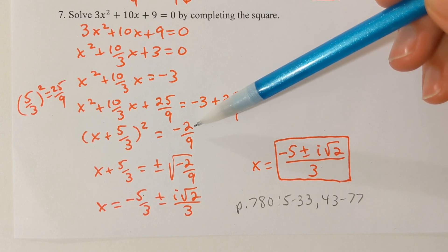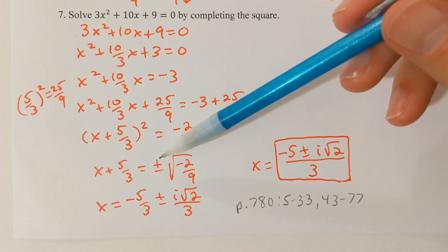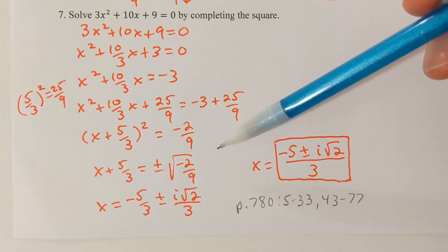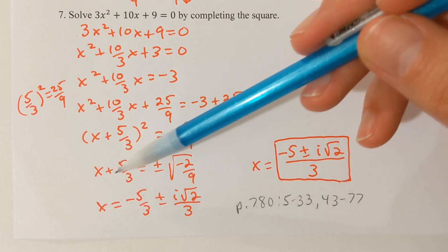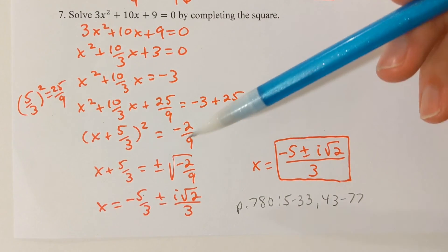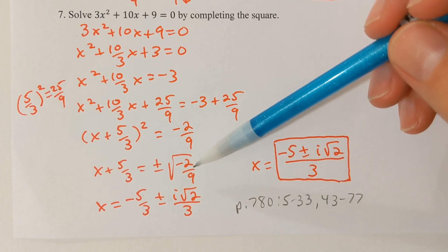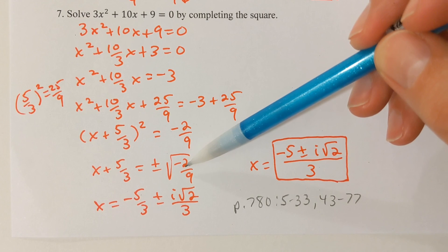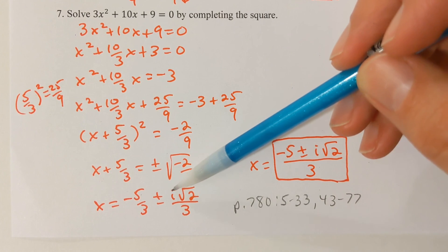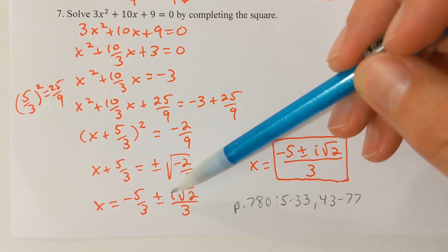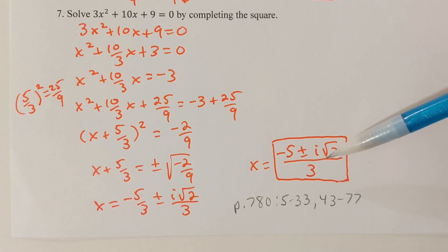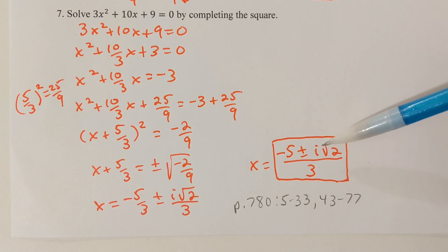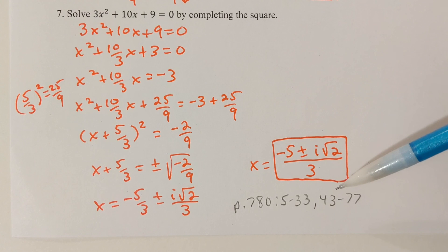I want to take the square root of both sides to get rid of the power of 2 — make sure you get the plus-minus there. Then subtract 5/3 from both sides to get x all alone. I can split this radical: I know the square root of 9 is 3. The square root of negative 2 is i√2 when I write that in imaginary form, so I'm going to have imaginary solutions. When I write this as a single fraction: (-5 ± i√2)/3 would be my two answers.